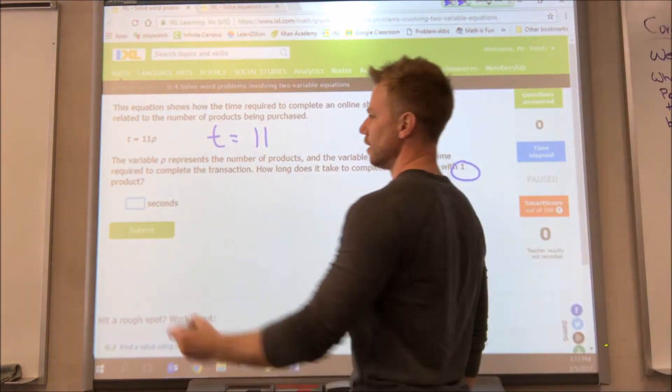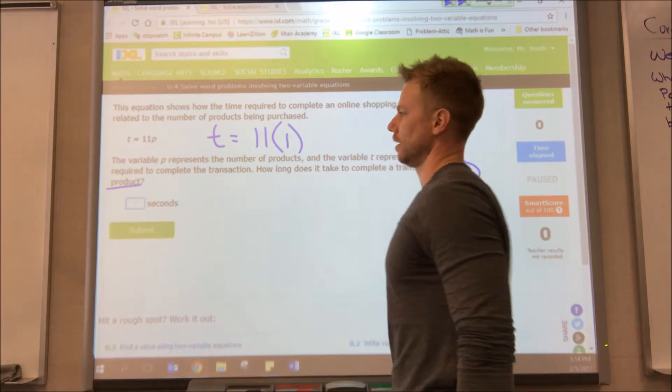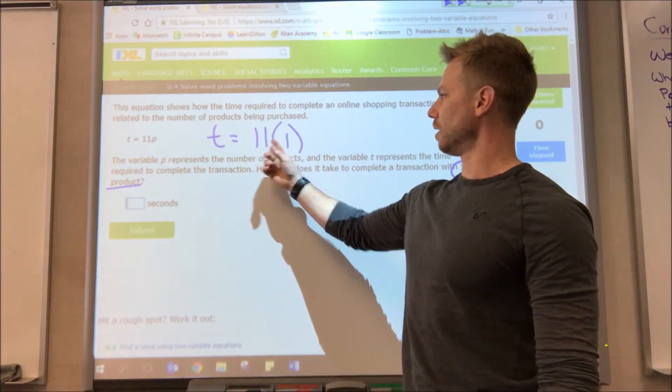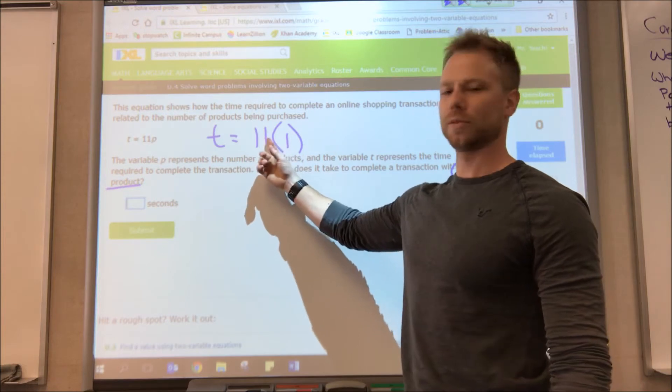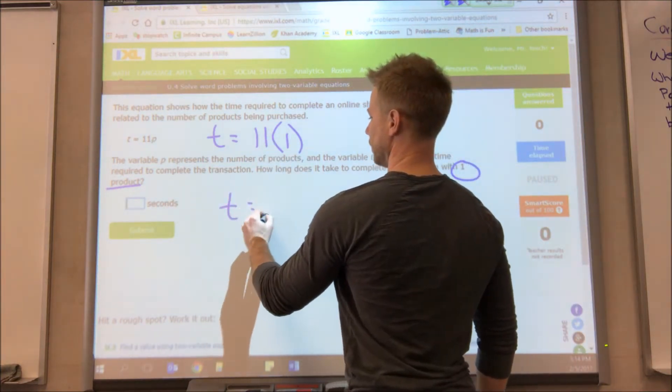So we're going to substitute one in place of p and then we're going to simplify. A number right next to each other with parentheses means multiply. 11 times 1 is just 11.